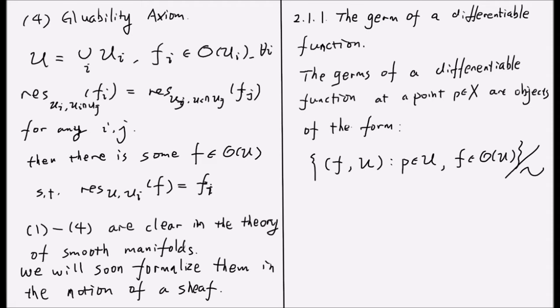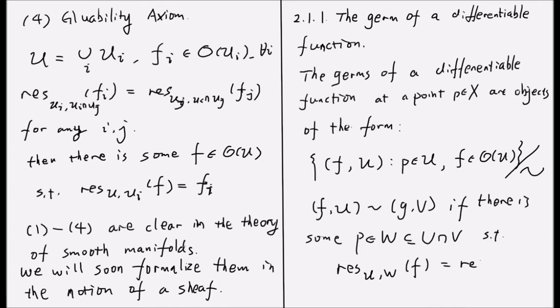The equivalence relation is given in the following way. We say the pair (f,U) is equal to the pair (g,V) if there is some open subset W containing p and containing U ∩ V,